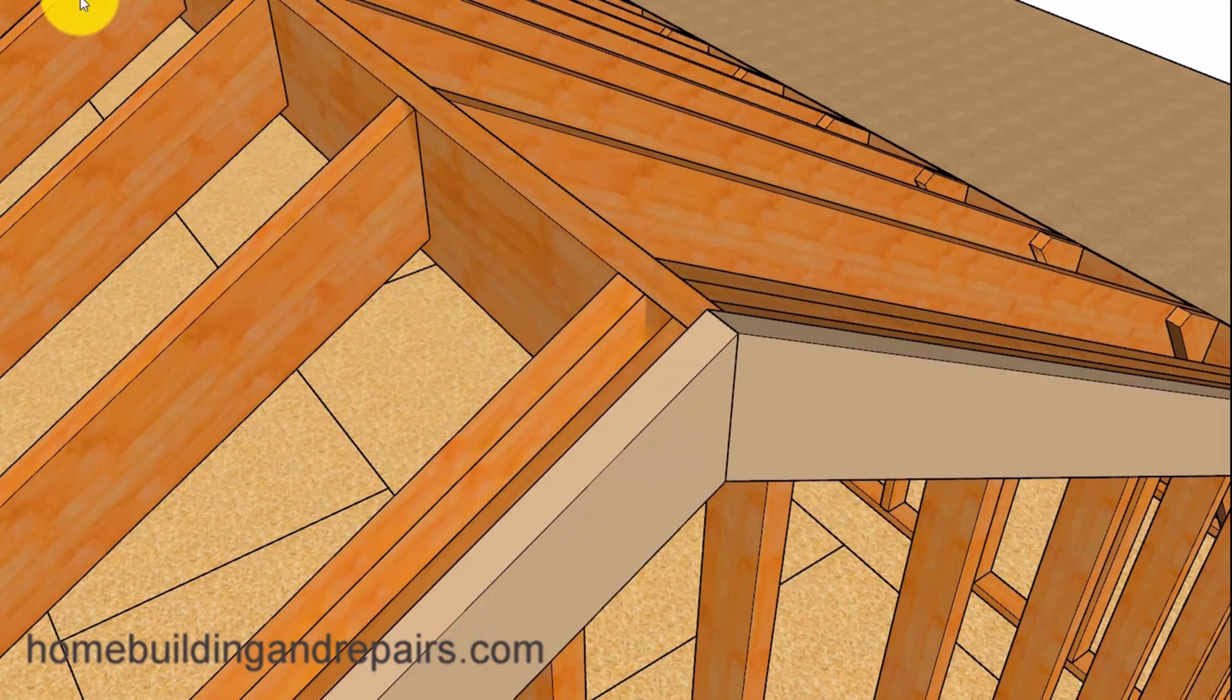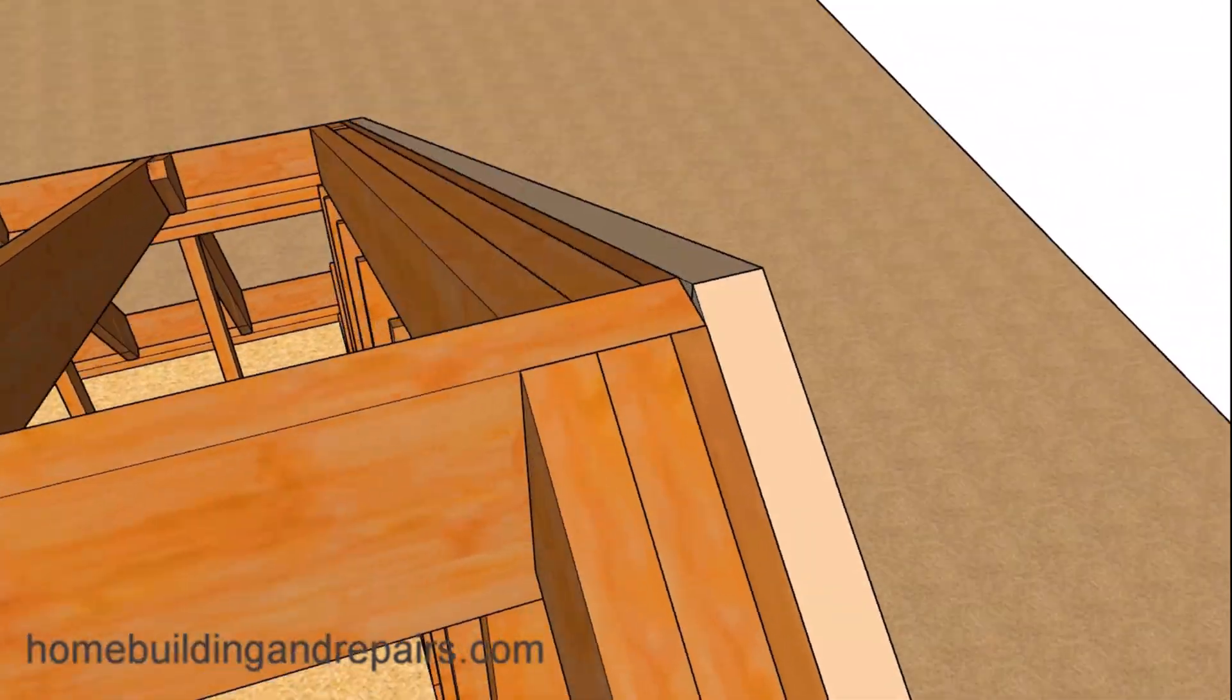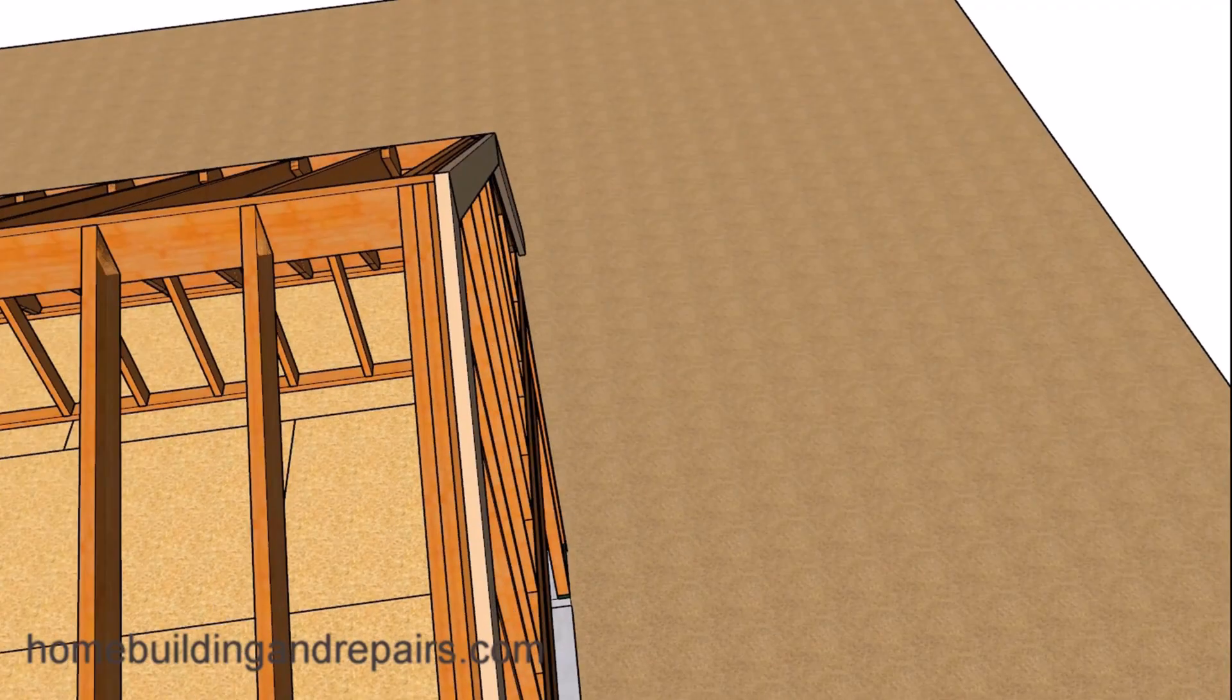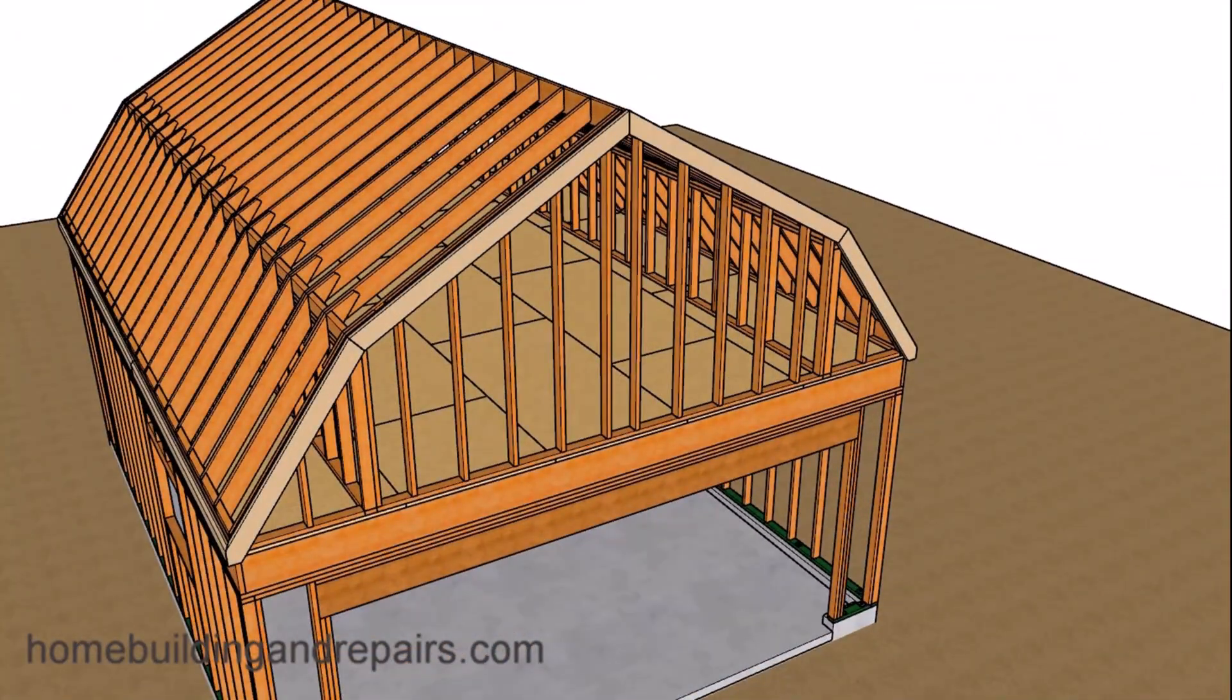Next up, let's install our fascia board. Our fascia board is going to be 2x6. The top of the fascia board will plane into or be even with the top of the roof rafters so that our roof sheathing will be nice and flat.